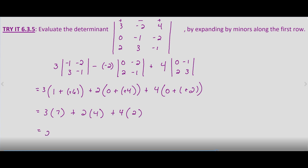That ends up being 21 plus 8 plus 8, which equals 37. So the determinant, evaluating the determinant of the matrix 3, negative 2, 4, 0, negative 1, negative 2, 2, 3, negative 1 by the first row, we end up with 37.